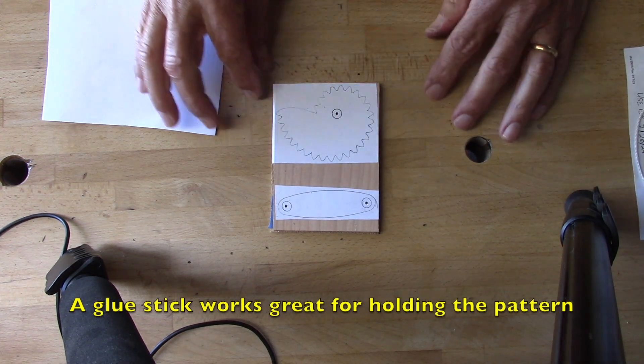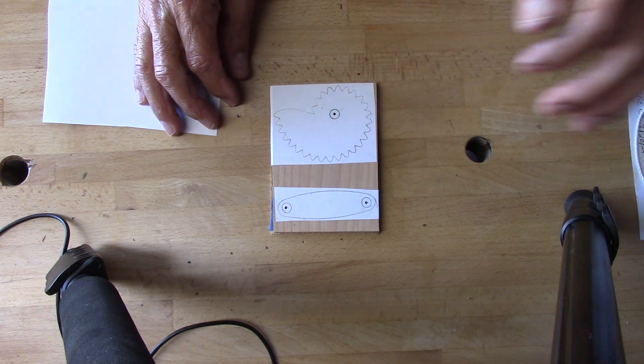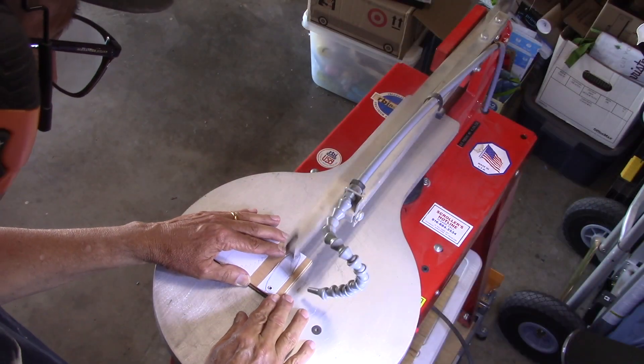Here are the center holes for the gears and the bracket. I'll pre-drill those now before I cut it apart.